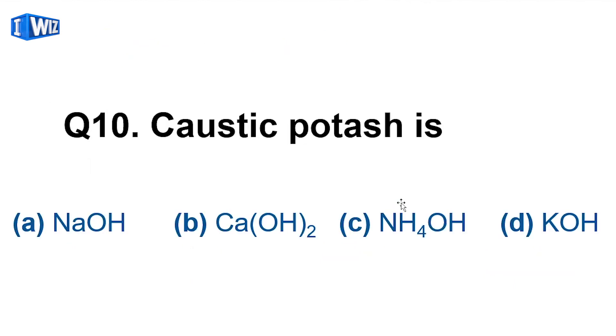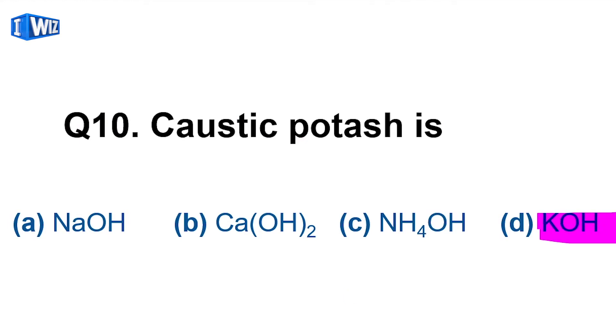Question number 10: caustic potash is KOH — potassium hydroxide. The answer is K-O-H.